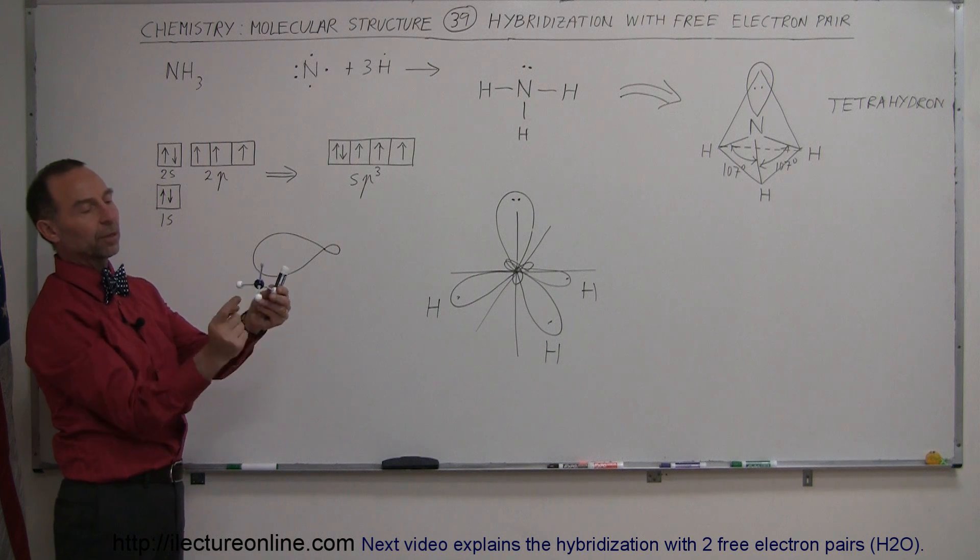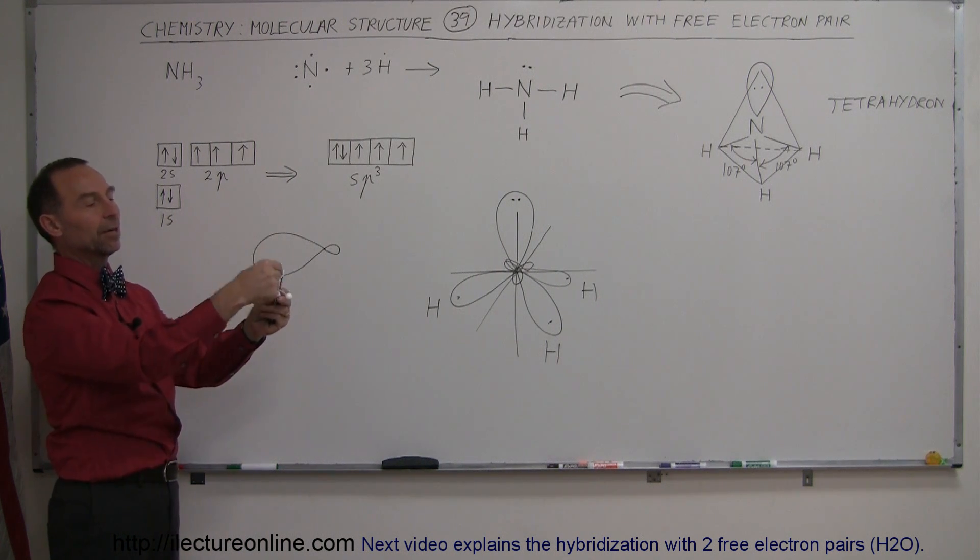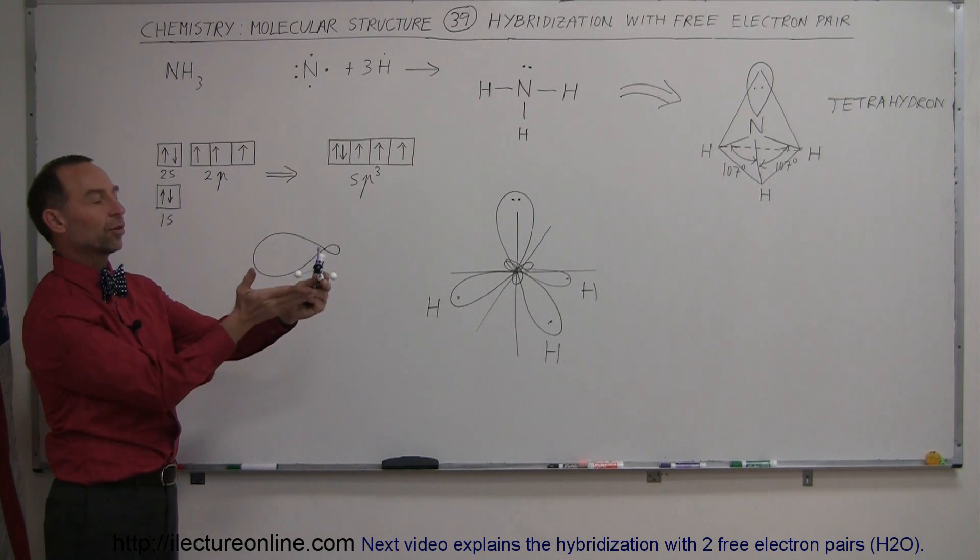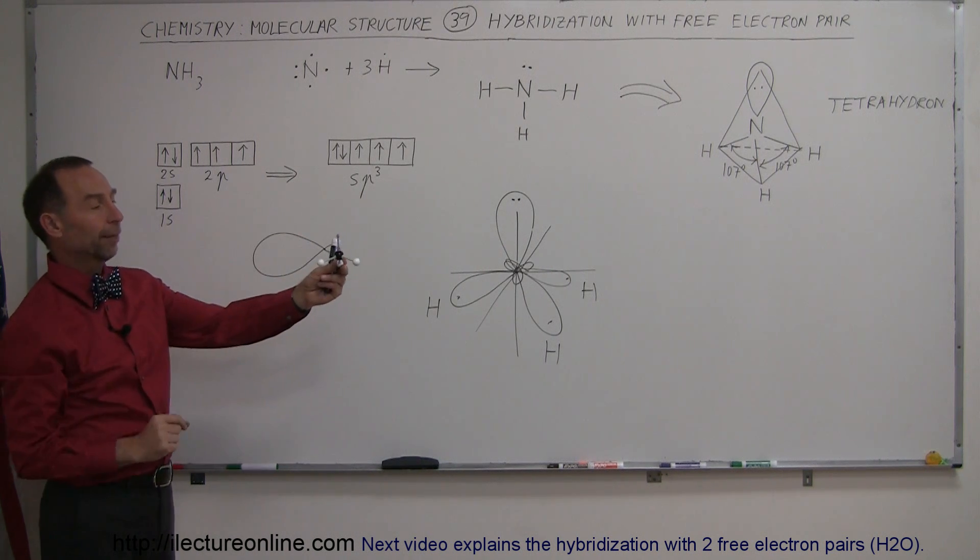So we have the nitrogen in the middle, we have the three hydrogens bent down somewhat, and we have the fully filled hybridized orbital sticking up straight up, making the tetrahedral shape without actually being bonded to a molecule or to an atom right there.